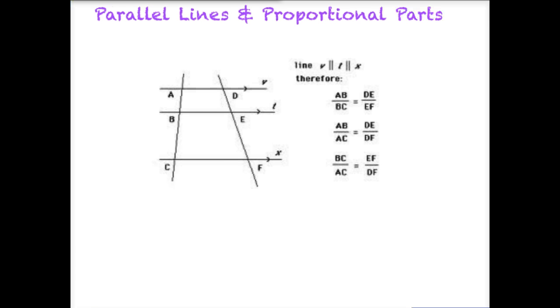In other words, if I mark these, AB over BC, so here we have AB, and here we have BC, is going to be in the same proportion or equal to DE, which is this part, over EF, which is this part. So if we have parallel lines, proportional parts are going to be equal, if we set up a ratio.